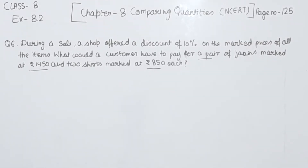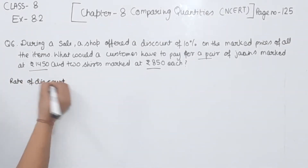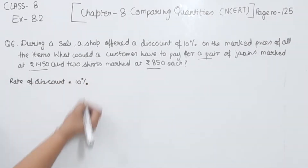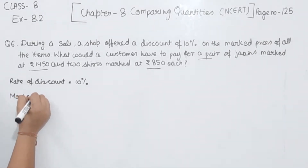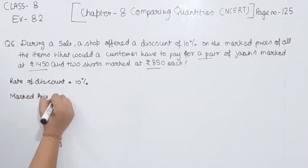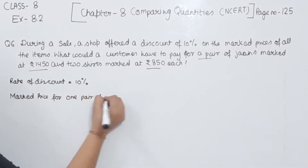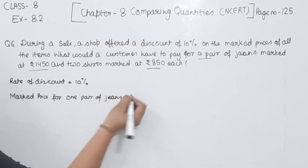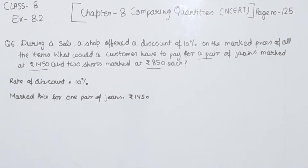First of all, we write the rate of discount, which is 10%. Now, we write the marked price of one pair of jeans, which is equal to ₹1450.